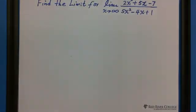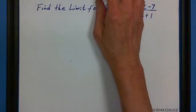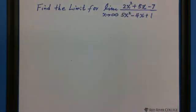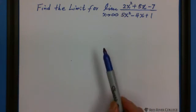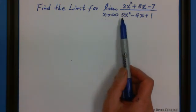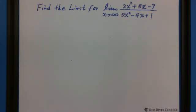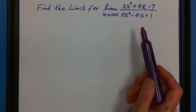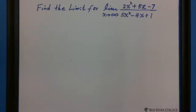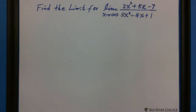Here is the question. Find the limit for when x approaches to infinity: 2x squared plus 5x minus 7 over 5x squared minus 4x plus 1. So step 1.